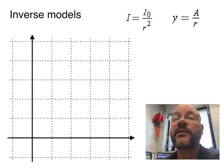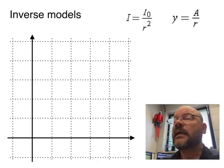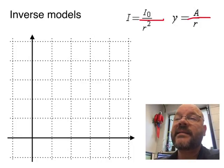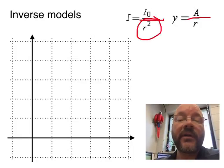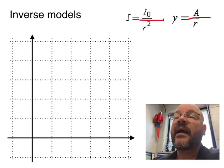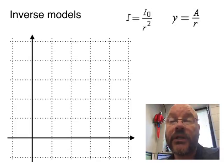So these next two models that we're going to look at are both categorically what we might call an inverse, because it's something over something like this. In this case, it's what we call inverse squared. And in this case, we just call it inverse. The difference between the two models really is how quickly they drop off or get larger.